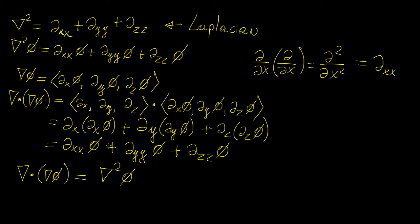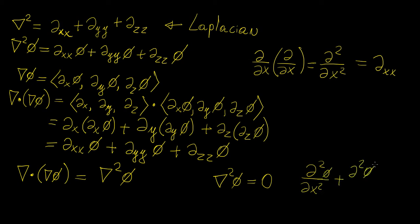Now where might this actually be useful? This is used quite a lot in describing partial differential equations. One of the main ones you might come across is called the Laplace equation, which is essentially just the Laplacian operator acting on some scalar function equal to zero. Written in two dimensions, you would have the second partial of phi with respect to x squared plus the second partial of phi with respect to y squared equals zero. This is a second-order linear partial differential equation, and it is homogeneous — there's no function on the other side, just the derivatives.